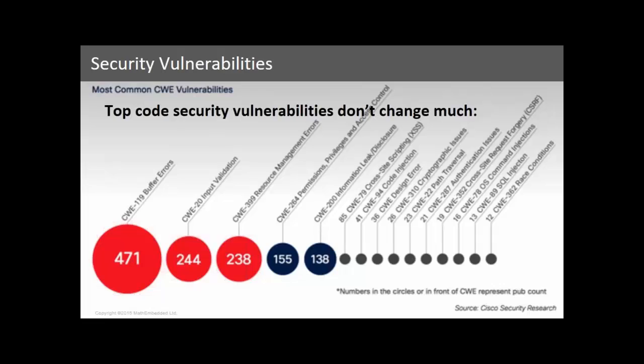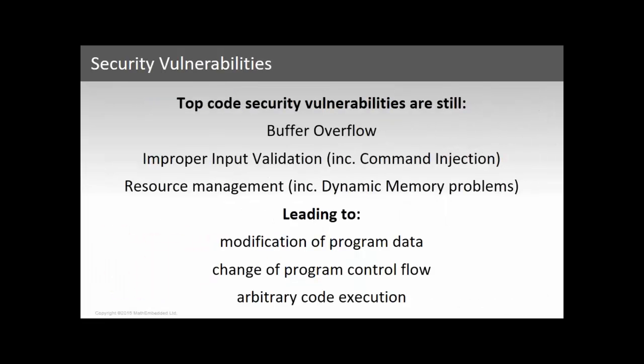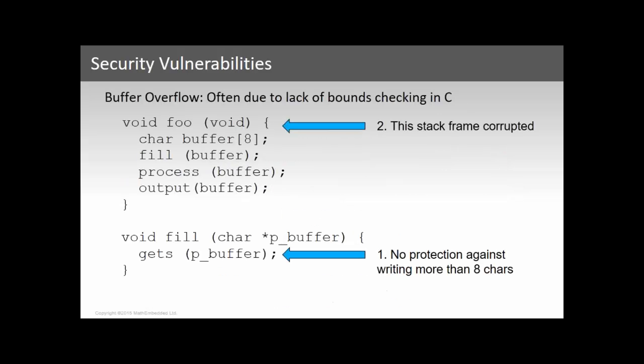Number three is resource management errors — things like dynamic memory allocation errors, double free, use after free. These can be exploited by hackers and lead to program data being modified, the flow of the program being modified, or even arbitrary code execution — people are able to put their own code on your platform by taking advantage of these vulnerabilities.